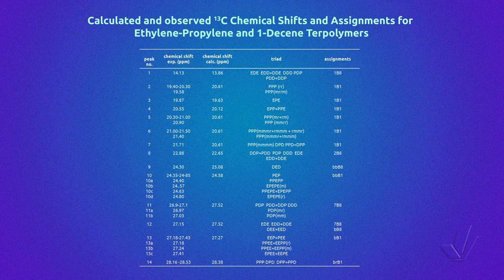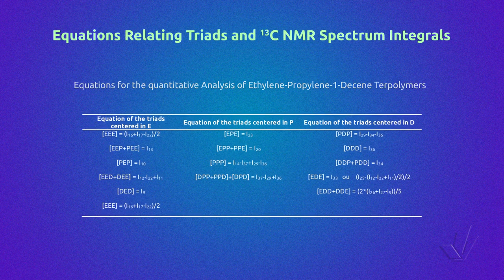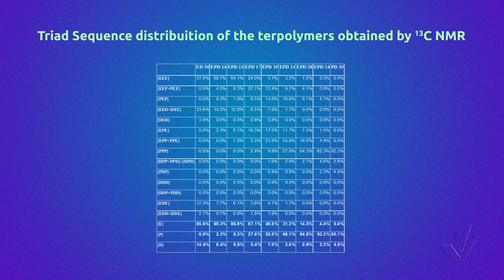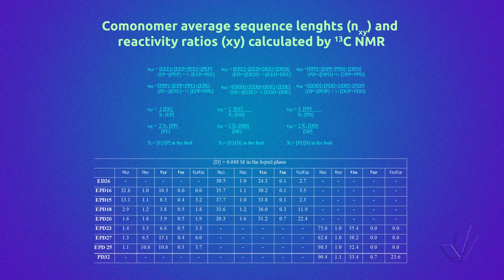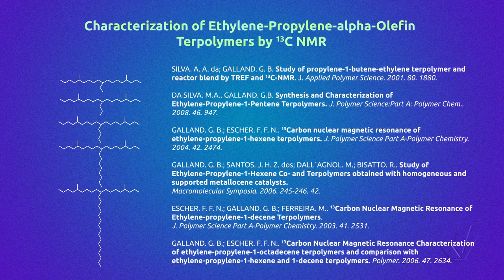In this figure, it is possible to see just one part of the table. It was also possible to obtain equations relating triads and carbon-13 NMR spectrum integrals, as can be seen here for ethylene-propene-1-decyne terpolymers. Here we can see the results obtained using these equations for different terpolymers with variable amounts of comonomers. Comonomer average sequence length and reactivity ratios were also possible to be calculated for the terpolymers by carbon-13 NMR, using equations of the same type as for the copolymers. This work was done for a series of terpolymers of ethylene-propene–alpha-olefins from 1-butene to 1-octadecene. More details can be seen in these references.